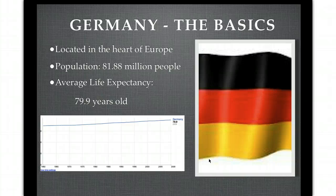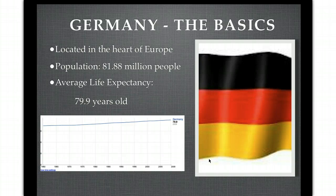Looking at some basic information about Germany: it's located in the heart of Europe as we just saw. Its population is about 82 million people, and its life expectancy is about 80 years of age — pretty similar to the United States, which comes in at about 79 years of age.